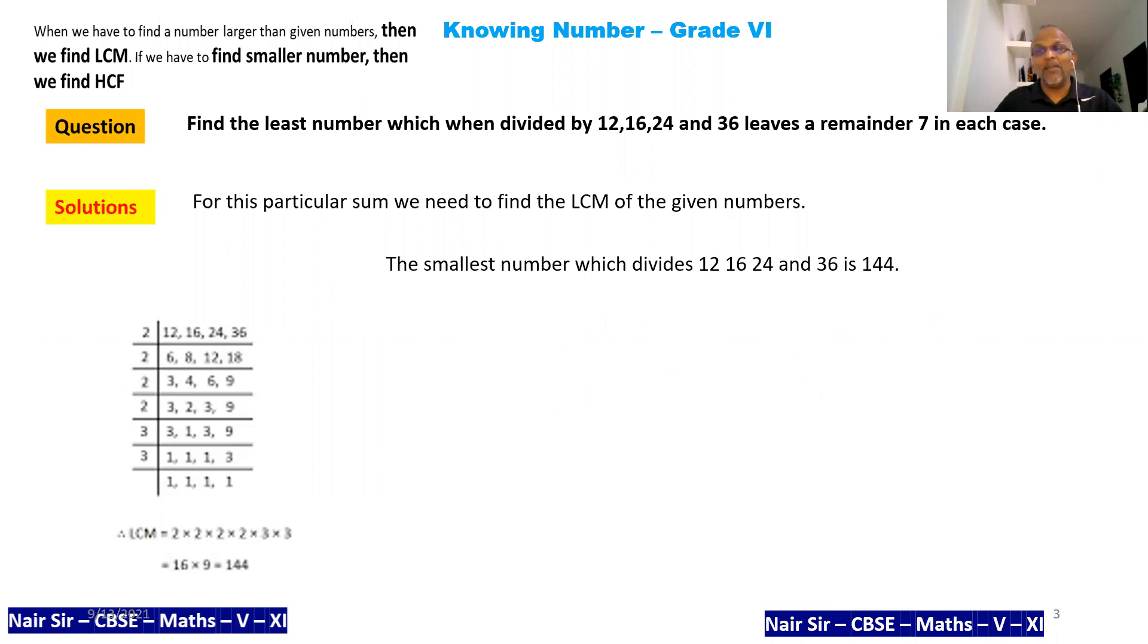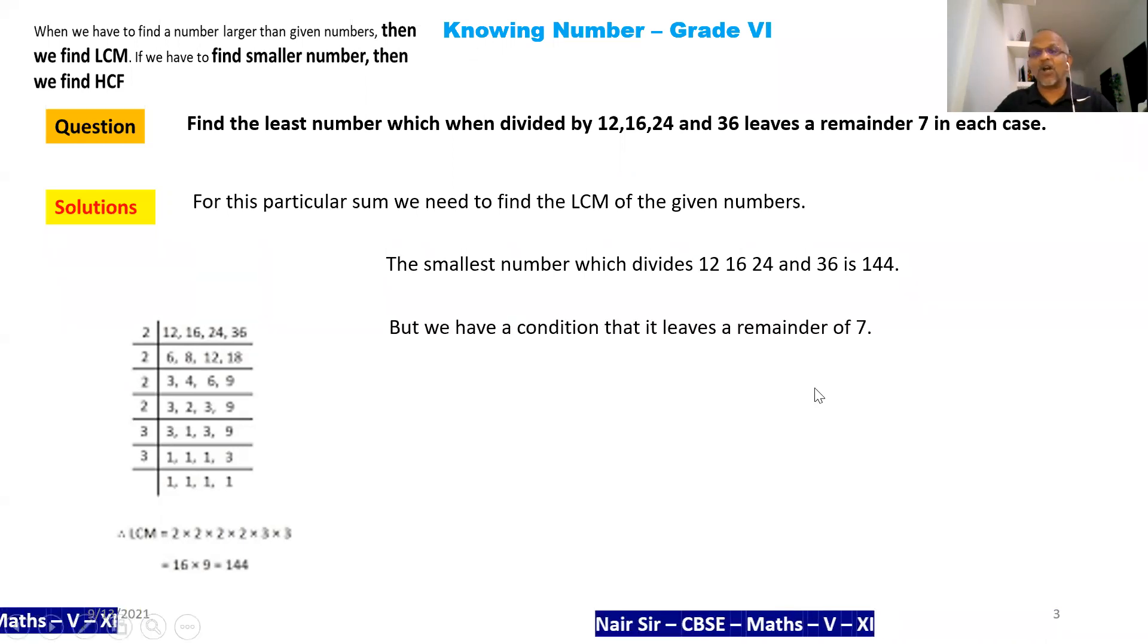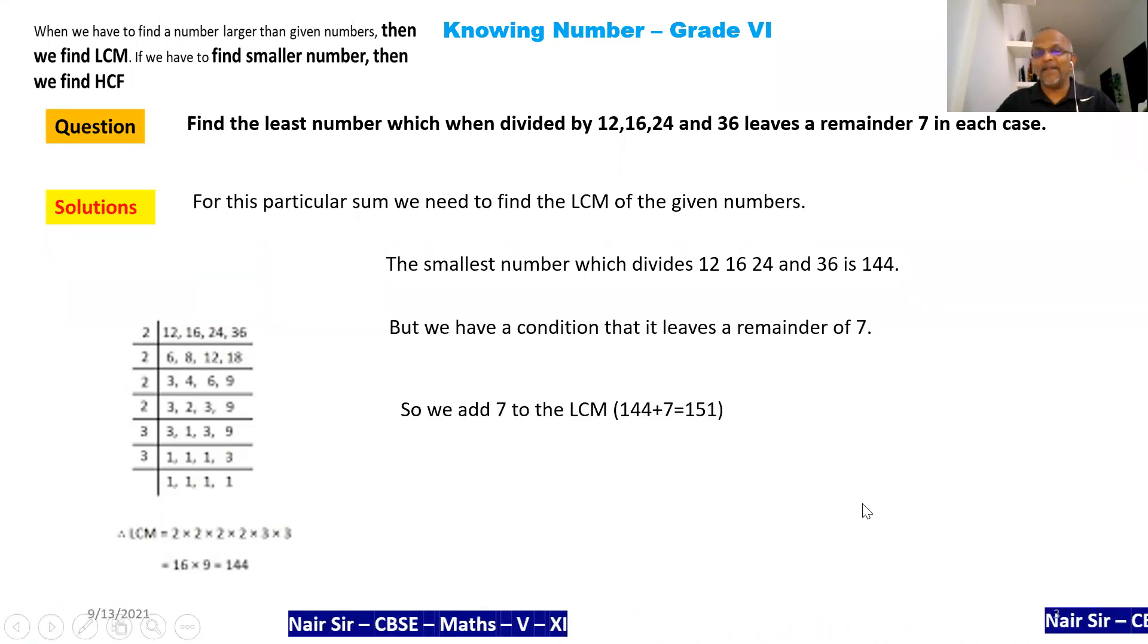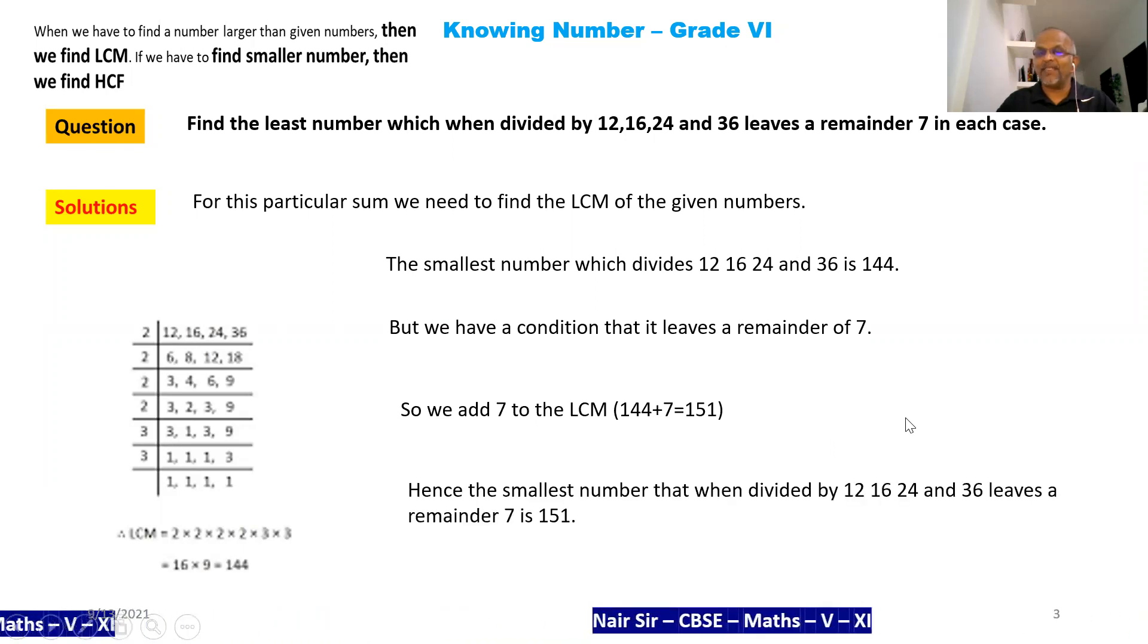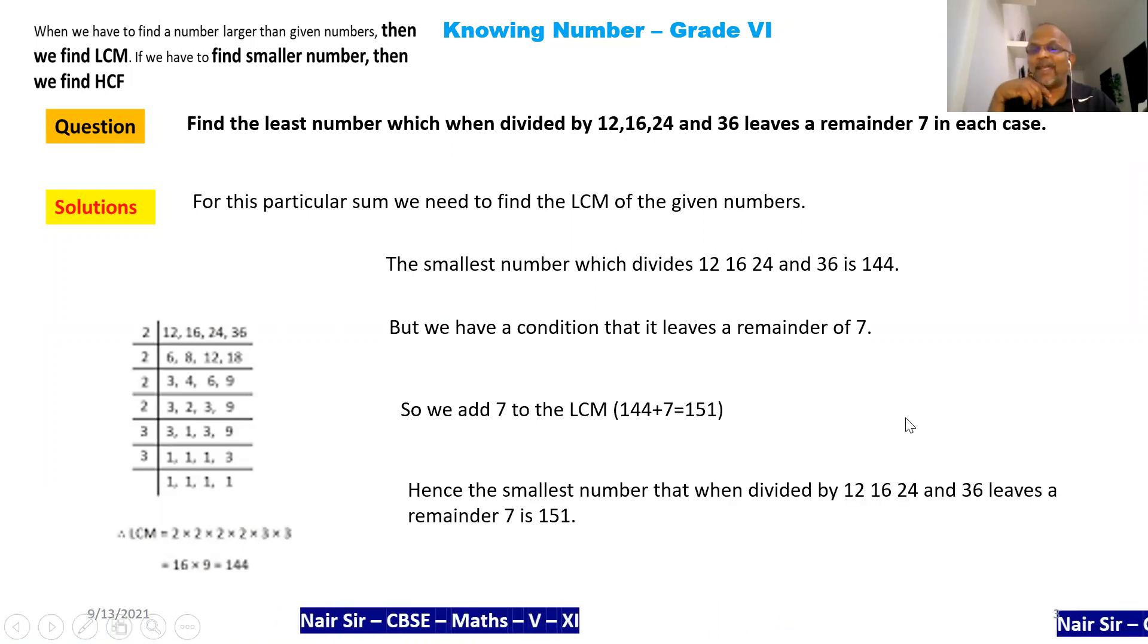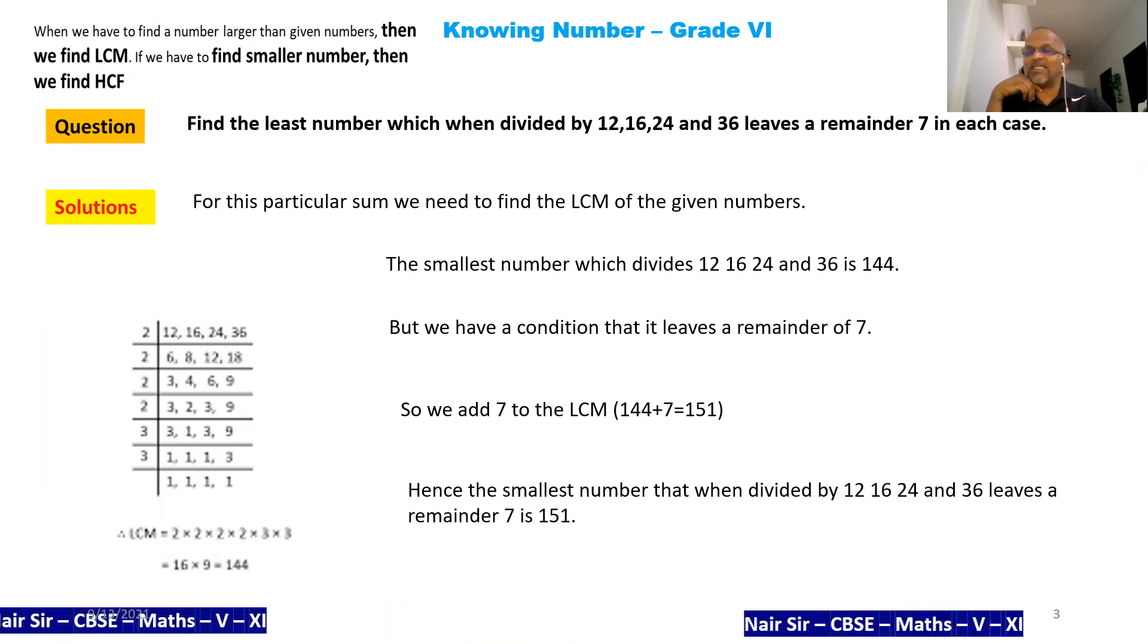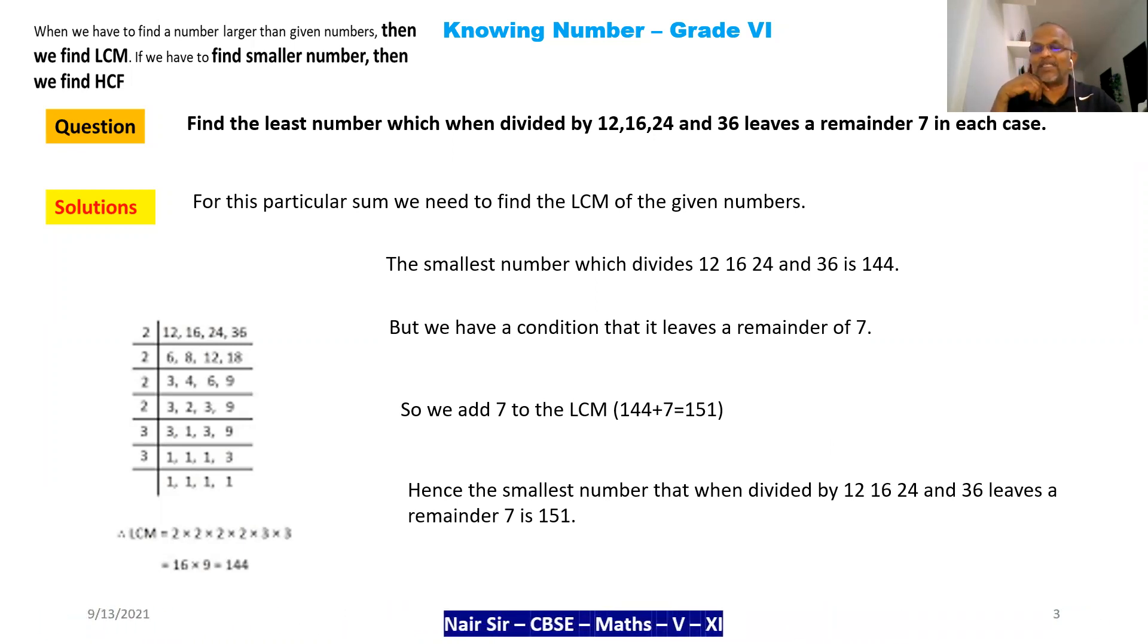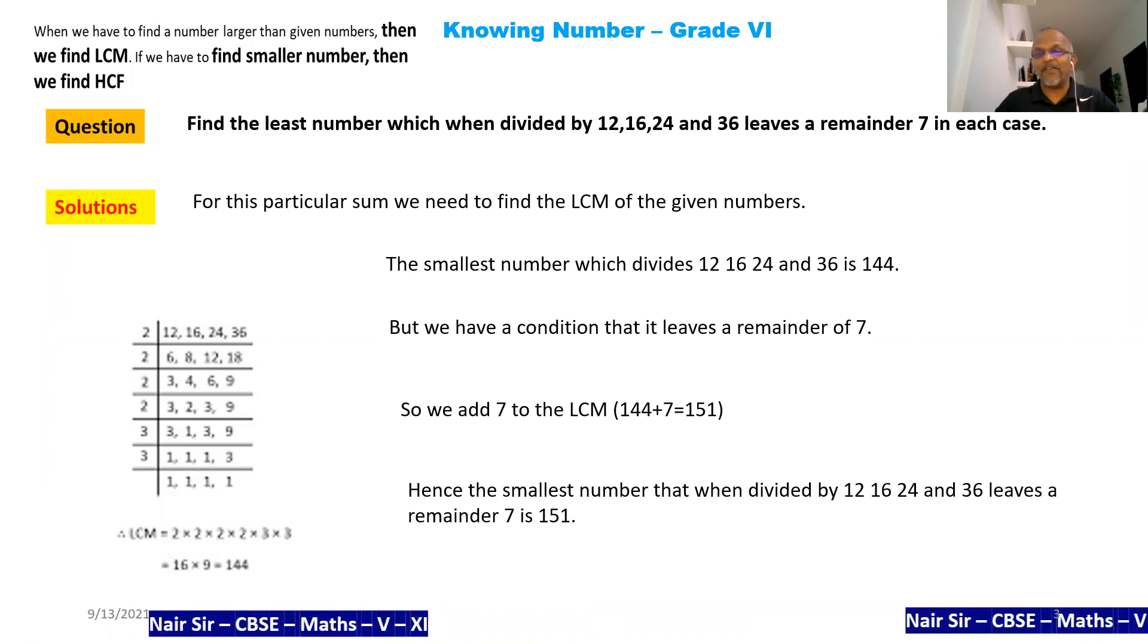The video is longer but the concept is rock solid. Hence, the smallest number that when divided by 12, 16, 24, and 36 leaves a remainder of 7 is 151.